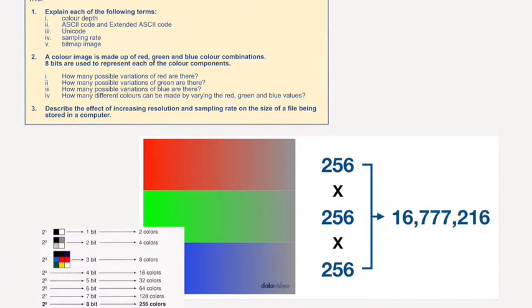Okay, and just to answer the final thing, describe the effect of increasing resolution and sampling rate on the size of a file being stored on a computer. If we increase the resolution, or we increase the sample rate on the size of a file, well, obviously, in terms of images, it's going to increase the size. And in terms of sound, it's going to increase the size. The higher the quality, the more space it's going to take up, the more space it's going to be needed to store that file.